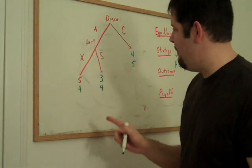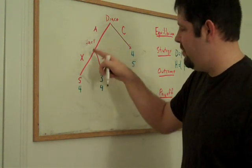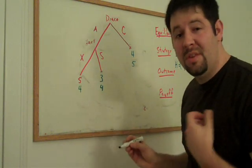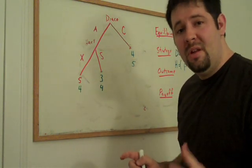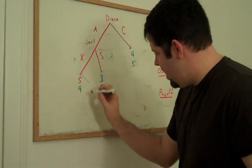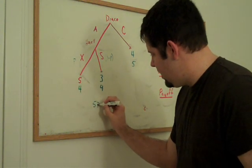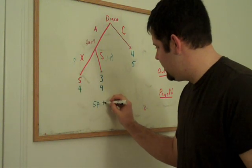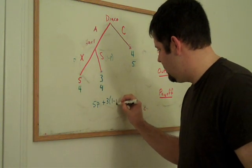What is the payoff for Draco choosing A? Well, we can go ahead and compute that just by computing the probability weighted average of the payoffs. So Draco's expected payoffs would be 5 times P plus 3 times 1 minus P.